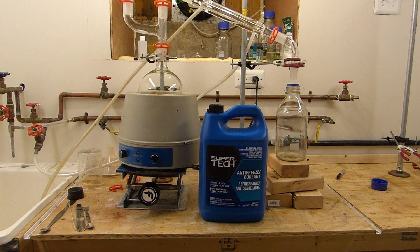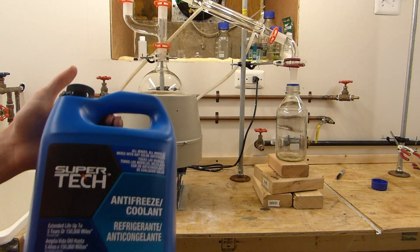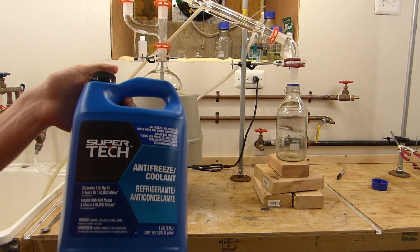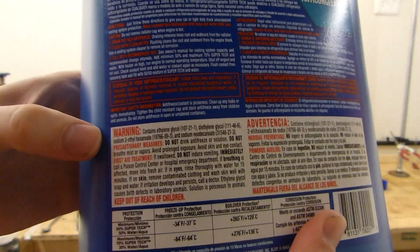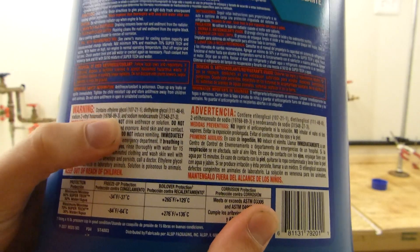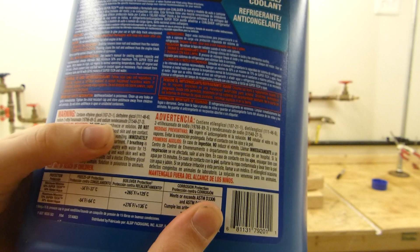The easiest way to get ethylene glycol is to simply look at the store for automotive antifreeze. Usually the cheaper stuff is the best to use. You want to get the undiluted antifreeze which doesn't contain water. If you look at the back here, the ingredients say it contains ethylene glycol, diethylene glycol, sodium-2-ethylhexanoate, and sodium neodecanoate.